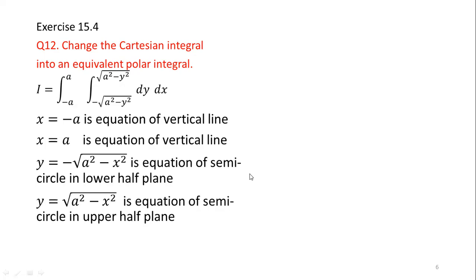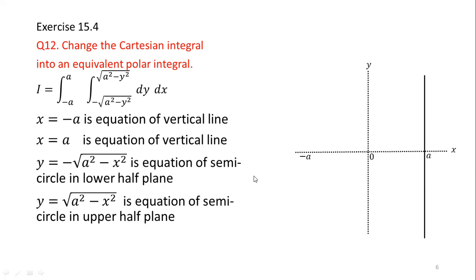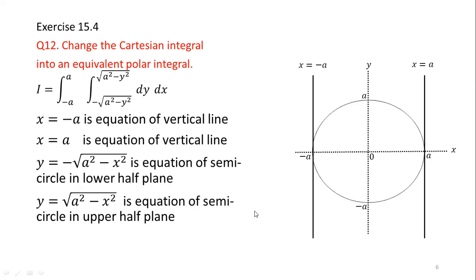We will now plot these boundaries. Since the x-axis and y-axis are not directly part of the boundaries, I have drawn them with dotted lines. This is the origin, x-axis, and y-axis. I have marked points a and minus a on the x-axis. x equals a and x equals minus a are vertical lines. The semicircle in the lower half plane and the semicircle in the upper half plane together form a complete circle with radius a. The region of integration is this whole circle.